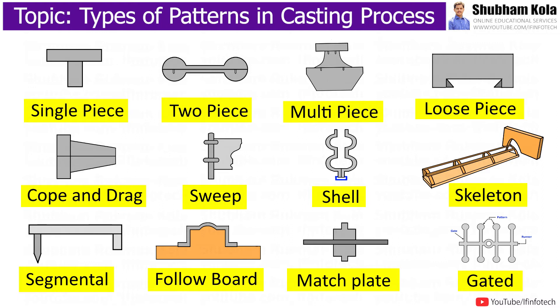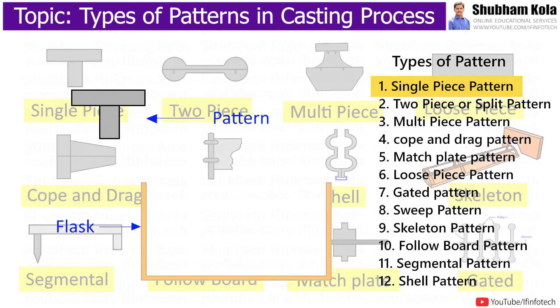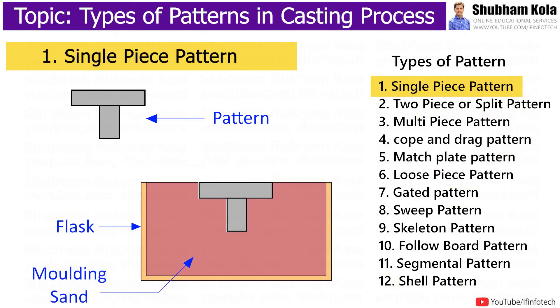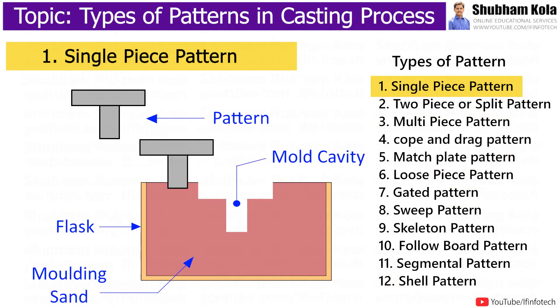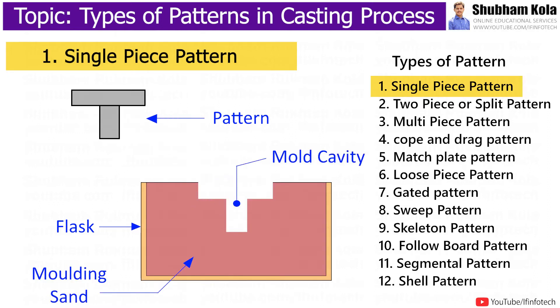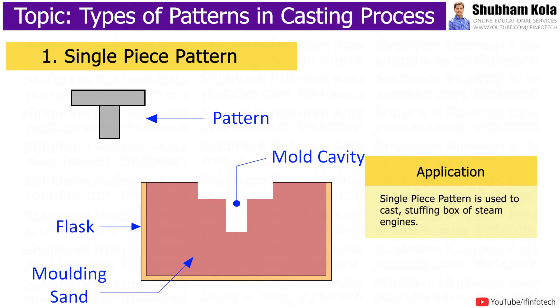In today's session, we are going to learn different types of pattern used in casting process. First is single piece pattern, which is the simplest type of pattern used for simple objects, made in a single piece. It is either placed in cove or in drag according to simplicity of operation. This type of pattern is used to cast stuffing box of steam engines.